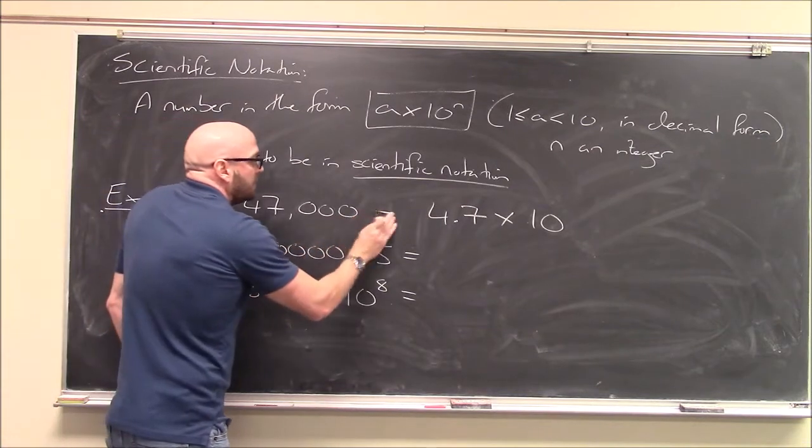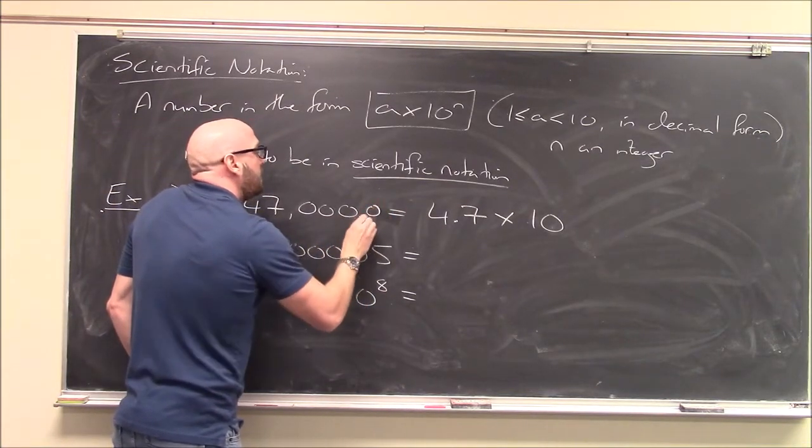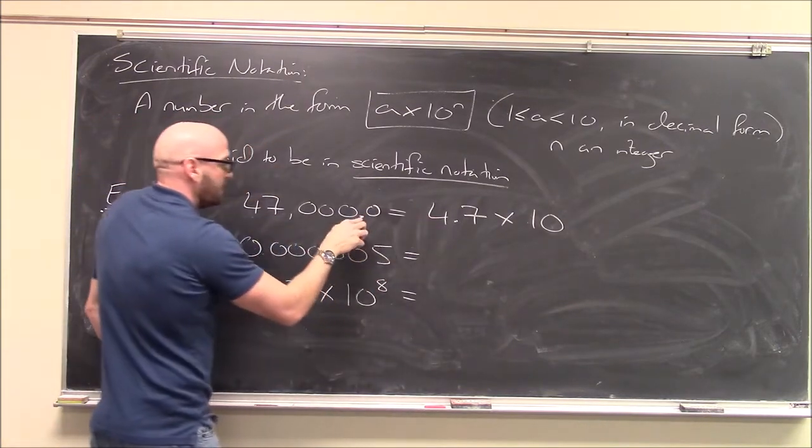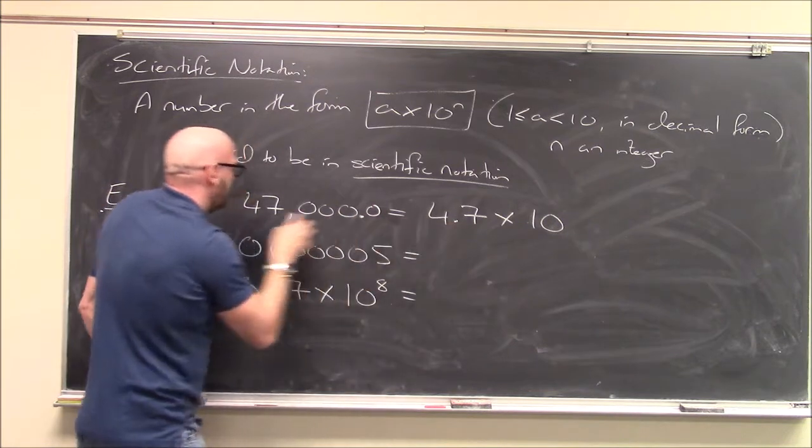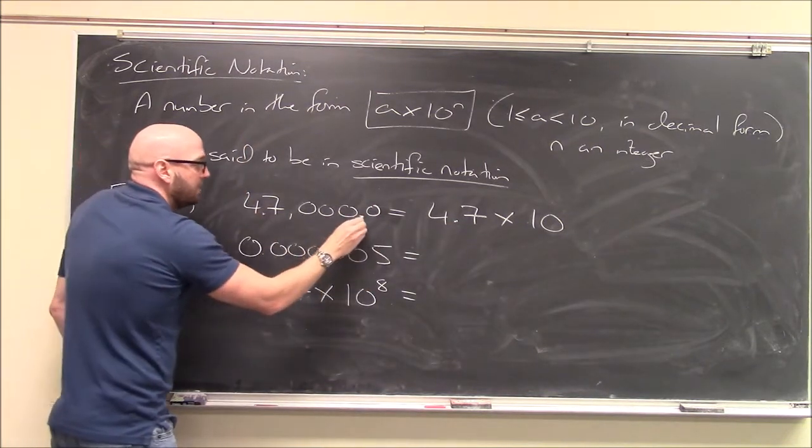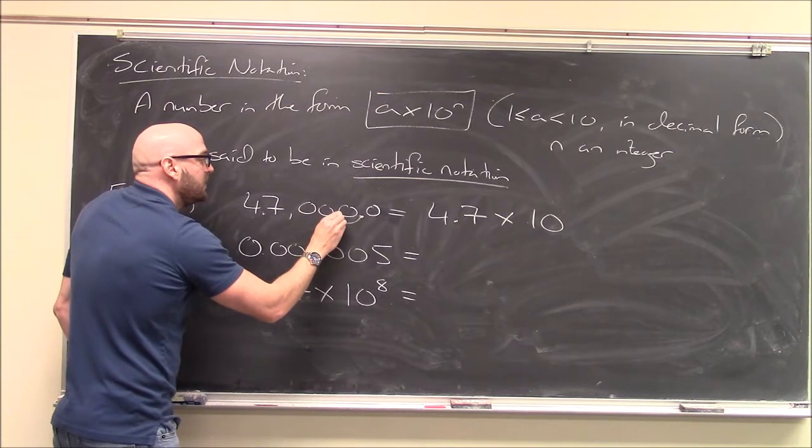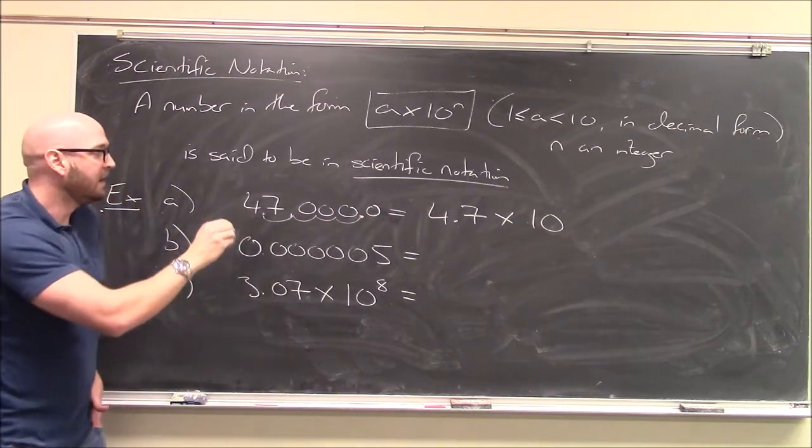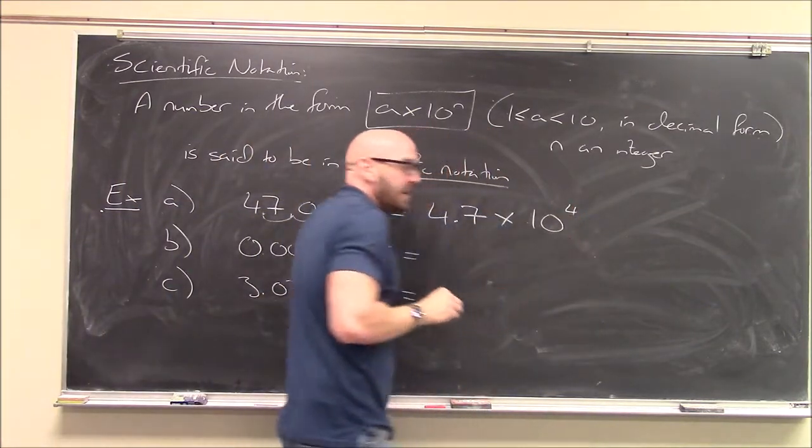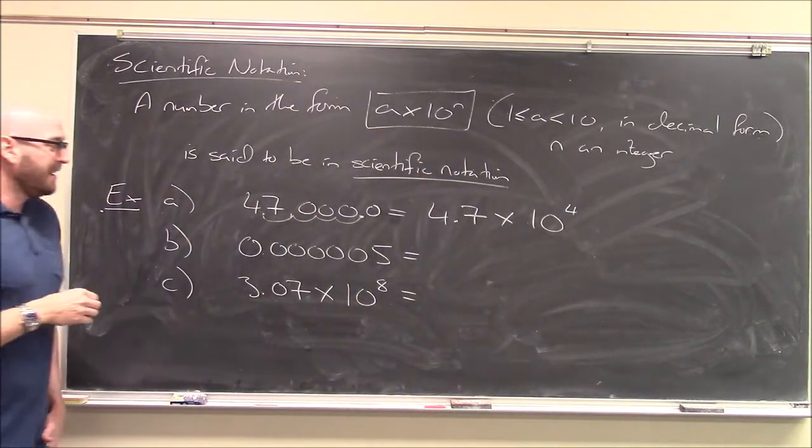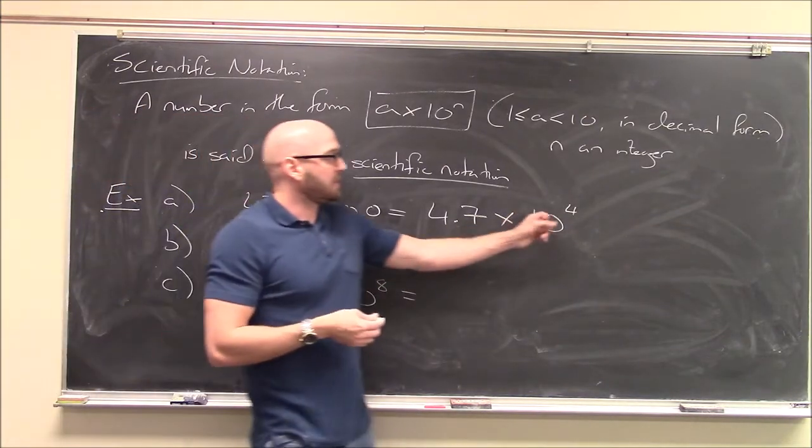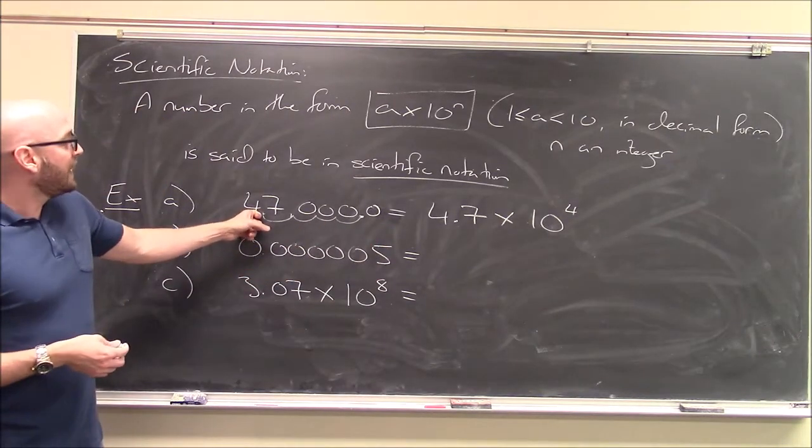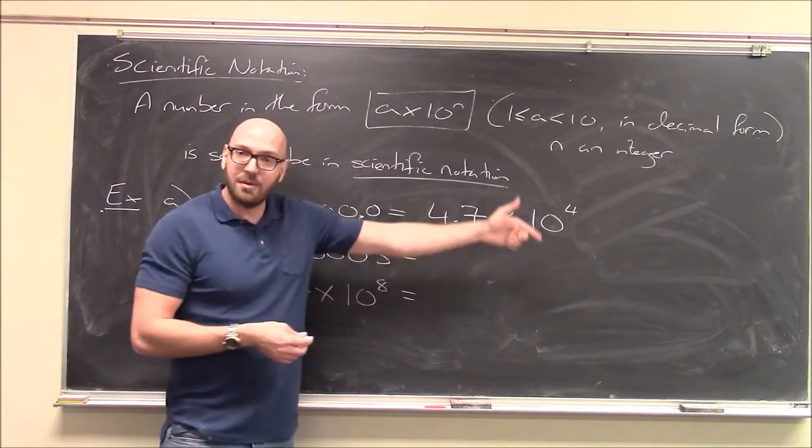Well, really, all you have to do is think about how far you have to move the decimal. Right? I've moved my decimal from here up to between the 4 and the 7. So how far does my decimal have to move? Well, it has to move one place, two places, three places, four places. So this is 4.7 times 10 to the 4. And if you think about it, that makes total sense, right? 10 to the 4th, 10 times 10 times 10 times 10 is 10,000. So 47,000 is 4.7 times 10,000.